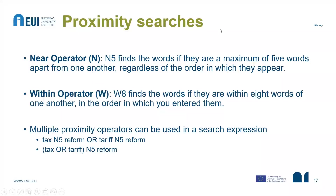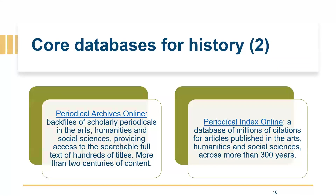You can also do proximity searches. The NEAR operator finds words if they are a minimum of five words apart from one another. The WITHIN operator finds words within a set number of words in the order you enter them — that's the difference between the two. If you need to perform very sophisticated searches, you have this option.